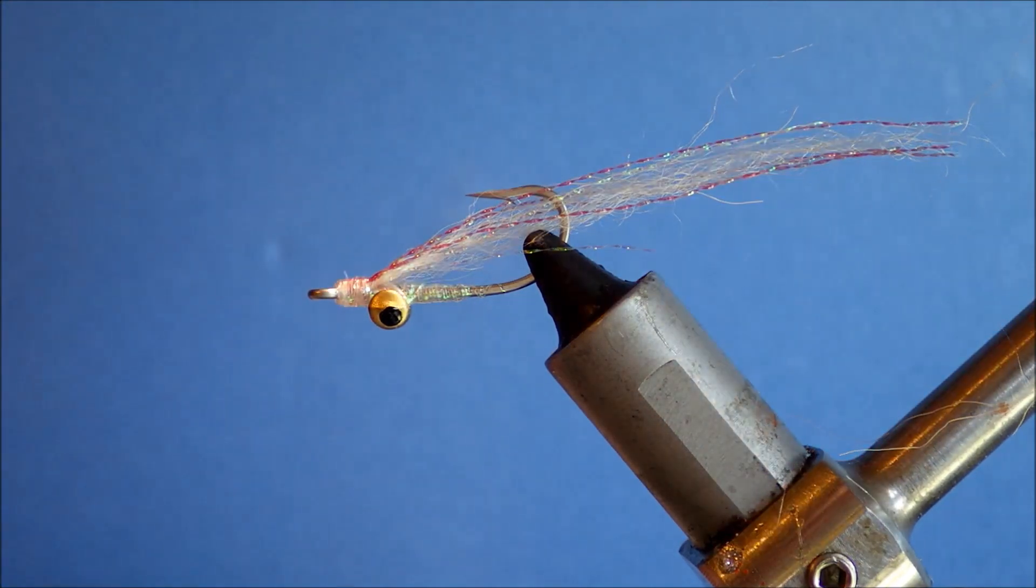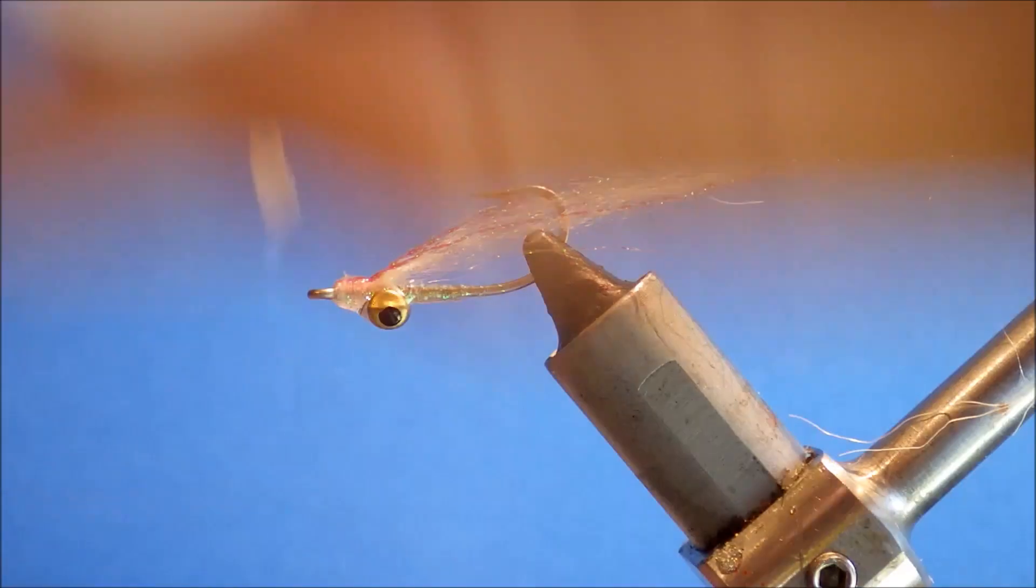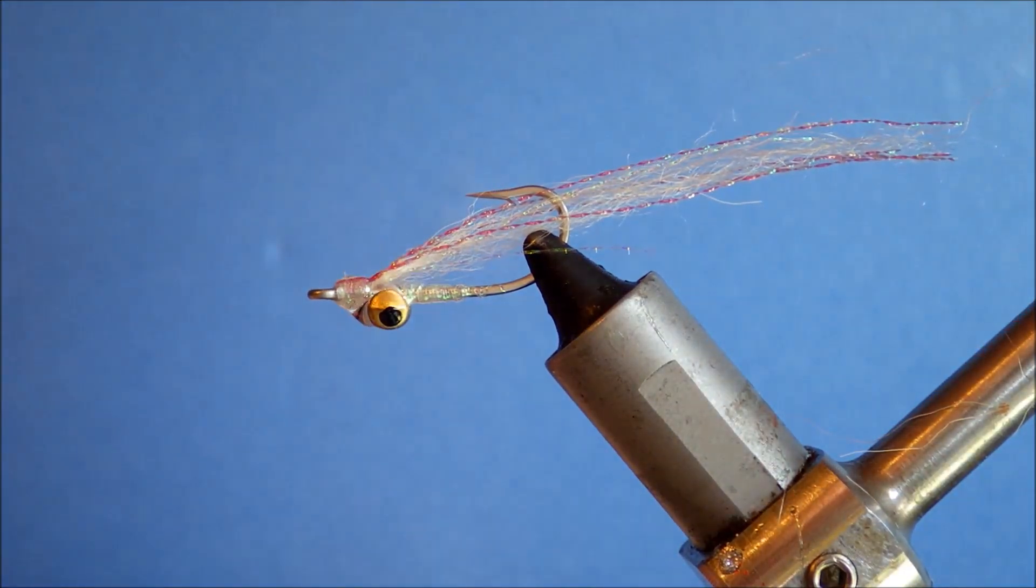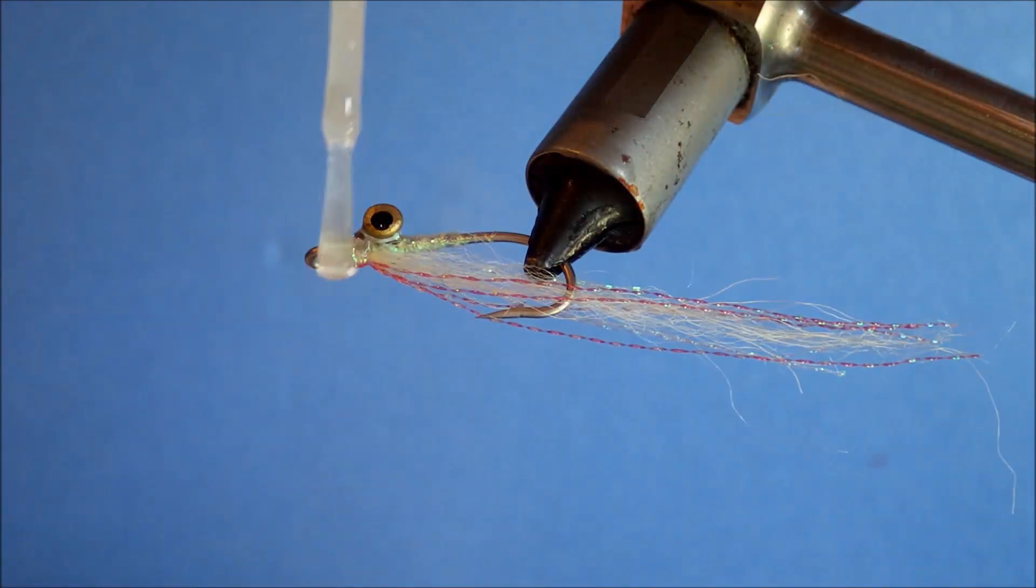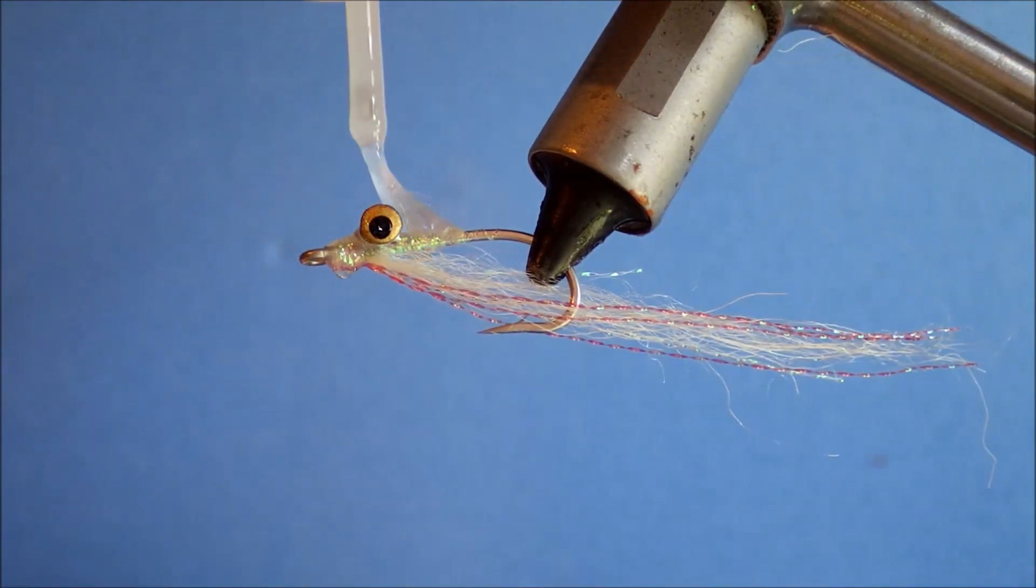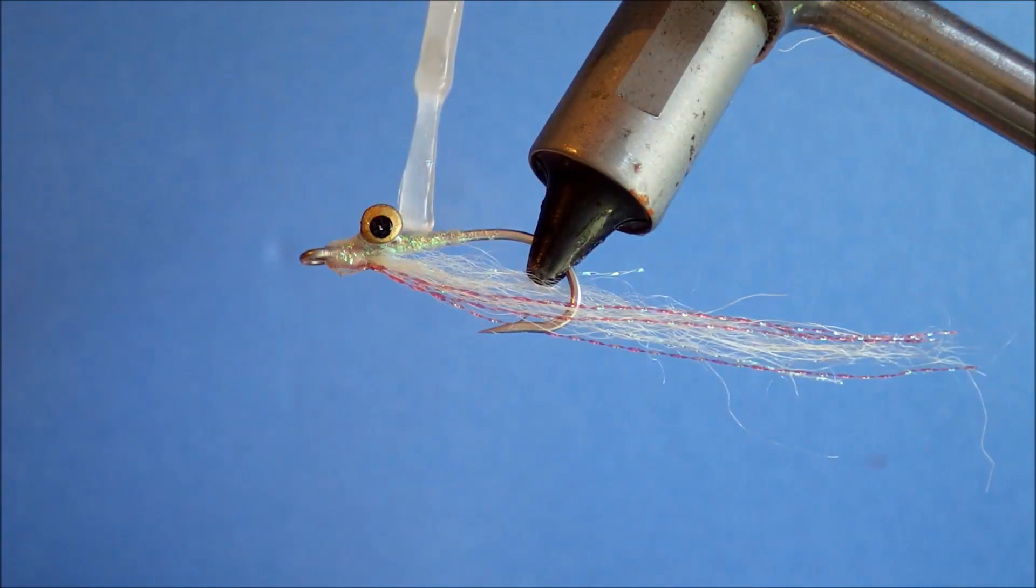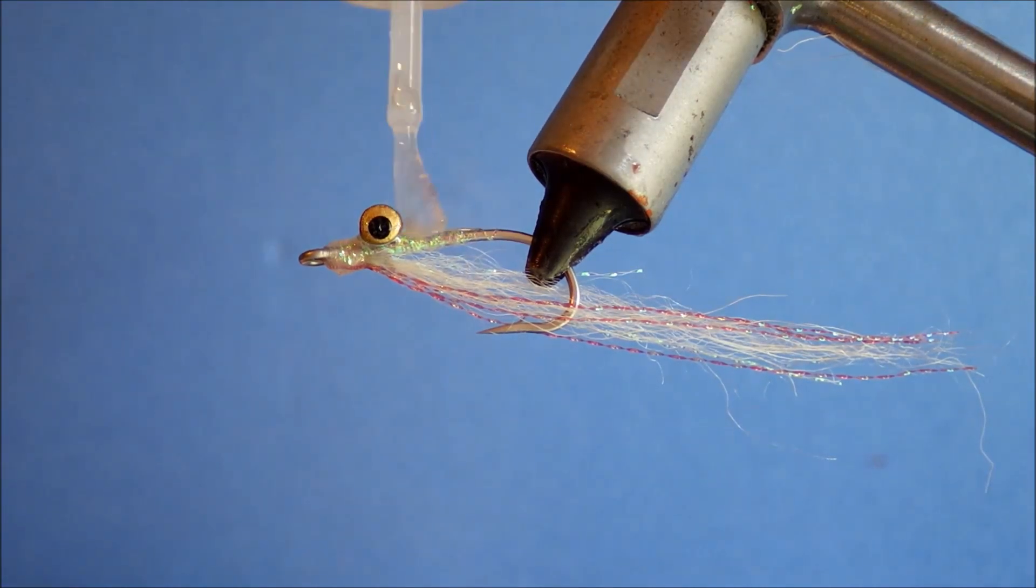I like to come in with head cement, no super glue this time, and slather it about the head there. Onto the eye. Over the dumbbells. And even the body. Doesn't do you any harm. And give that a coat.